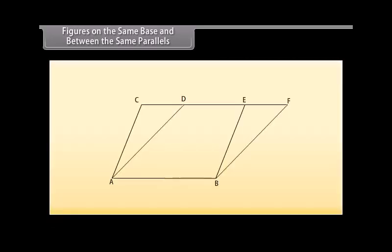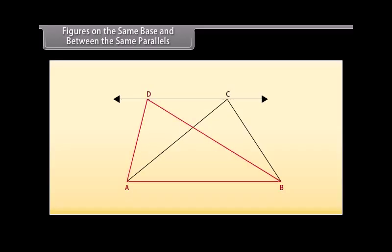Figures on the same base and between the same parallels. Now, look at this figure. We can see that parallelogram A-B-E-C and parallelogram A-B-F-D are on the same base, A-B. Also, the vertices C and E of the parallelogram A-B-E-C opposite to A-B, and vertices D and F of the parallelogram A-B-F-D opposite to A-B, lie on the same line C-F, which is opposite to A-B. So, both parallelograms lie on the same base A-B and between the same parallels A-B and C-F. Similarly, triangles A-D-B and A-C-B both lie on the same base A-B and between the same parallels A-B and D-C.